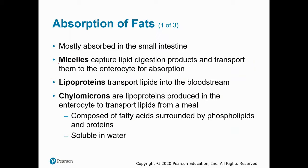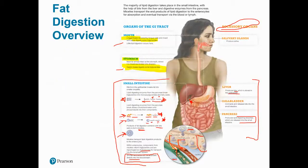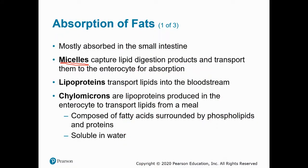Let's get these two straight. The micelle is packaged inside the lumen of the small intestine. It gets absorbed into the enterocyte, dissociates inside the enterocyte, and all those same components package up into a chylomicron. So micelles capture lipid digestion products and transport them into the enterocyte. Chylomicrons are produced in the enterocyte and absorbed into the lacteal and ultimately into the bloodstream. Chylomicrons are composed of fatty acids, monoglycerides, cholesterol, and cholesterol esters on the inside, while the outside is made of phospholipids and proteins.